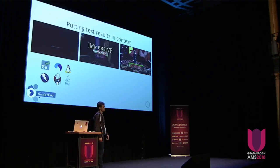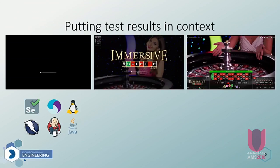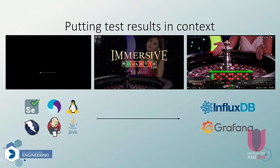Putting test results in context — this is how my journey started with Grafana. At Evolution Gaming, we wanted to measure how fast our games are loading. I took some tools, created a solution, and in the end I got some numbers. But numbers are numbers without context — they don't make much sense. So I talked with some big data guys, and they proposed to put all this information into InfluxDB to visualise it in Grafana.